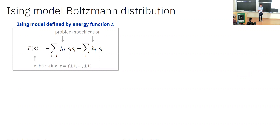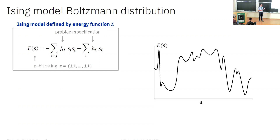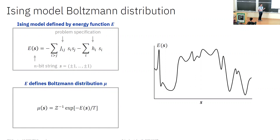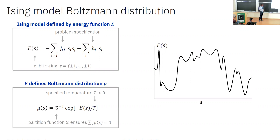It's convenient and common to visualize this function as representing a sort of landscape. This energy function is not a probability distribution, but it does in turn define the distribution that we'll be interested in — namely the corresponding Boltzmann distribution, which assigns some probability mu of s to every bit string s that goes like the negative exponential of the energy of that string. The Z out front is just a normalizing factor called the partition function, and the parameter T is sometimes called the temperature — you can think of it as some positive number given to us as part of the specification.